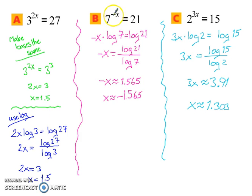So we have log 7 to the power of negative x. Bring your exponent down in front. So you have negative x times log 7 equals log of 21. Divide and then multiply by negative 1. And you get x is about equal to negative 1.565.